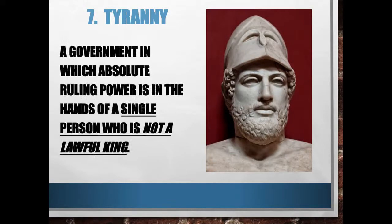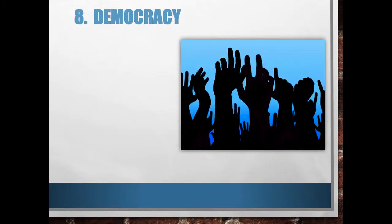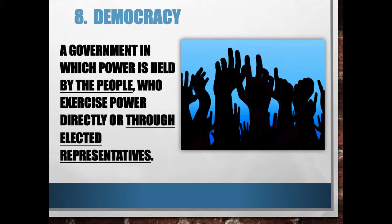We will now talk about democracy. Democracy is the form of government we like to think of as the best here in the United States. Democracy is a government in which power is held by the people, who exercise that power directly — meaning everybody votes on everything — or through elected representatives, which is the form we are used to here. In a democracy, the average citizen still feels as though they have some power and influence over what goes on, even if that influence is limited to casting their vote every couple of years.